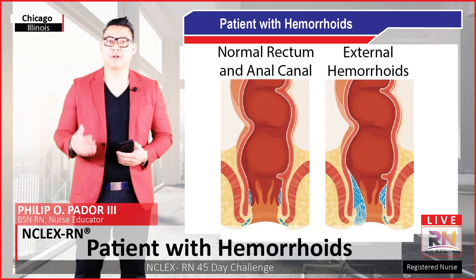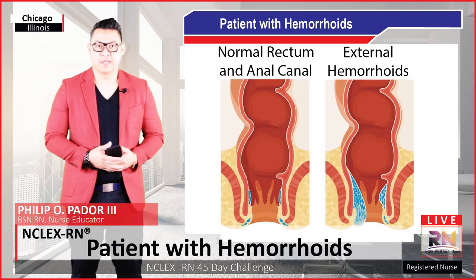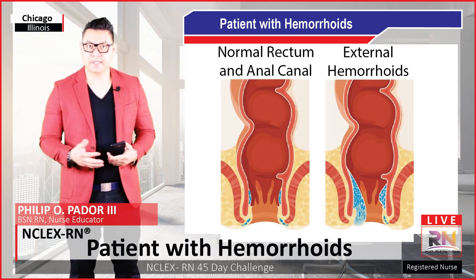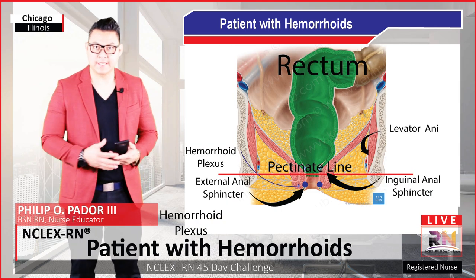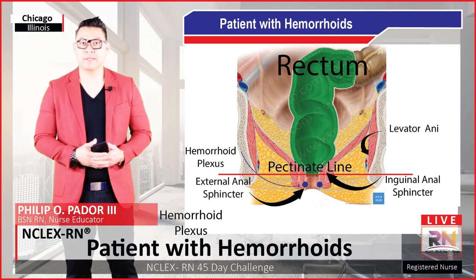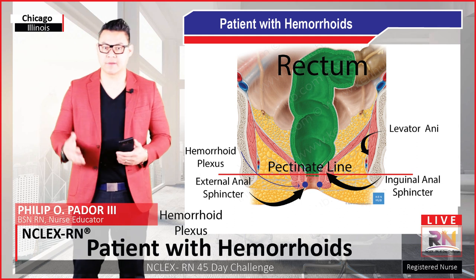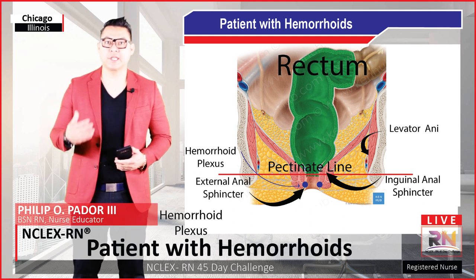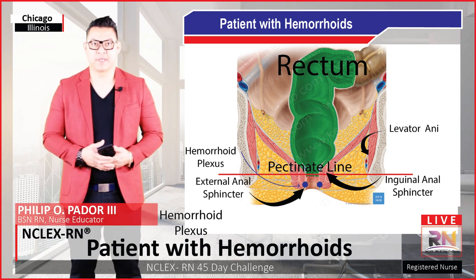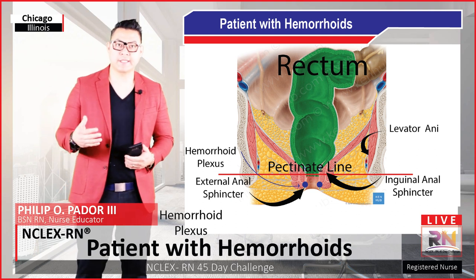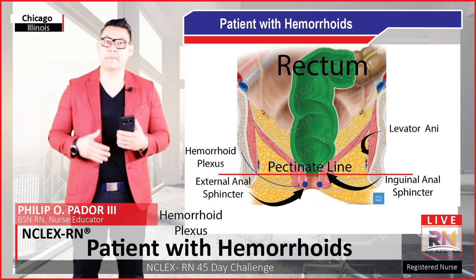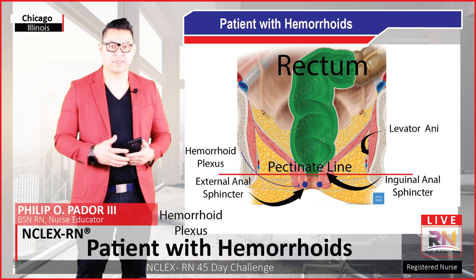Now let's compare the normal with the abnormal. We need to review the anatomy. The pectinate line, also known as the dentate line, is a clinically important landmark due to the fact that it is visible and approximates the level of certain anatomical changes. These changes are embryological in origin. Anything above the pectinate line is endoderm in origin, and anything below the pectinate line is ectoderm in origin.